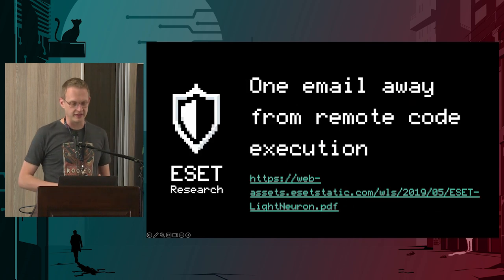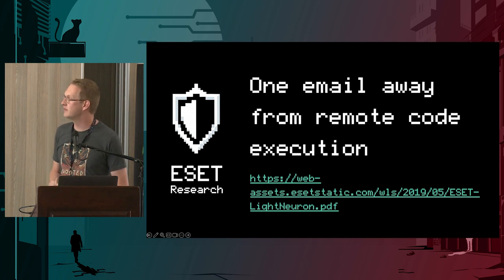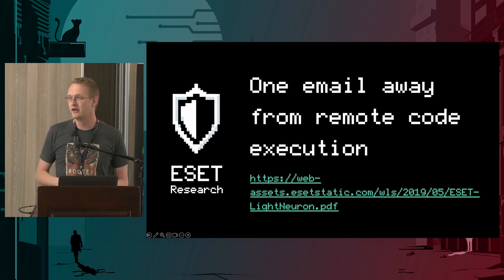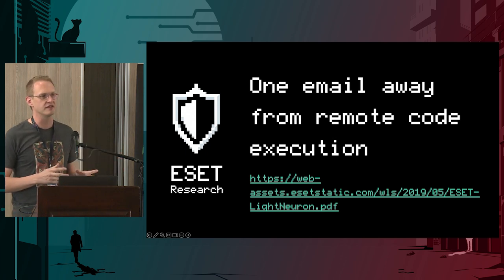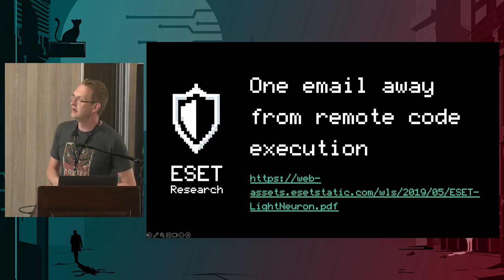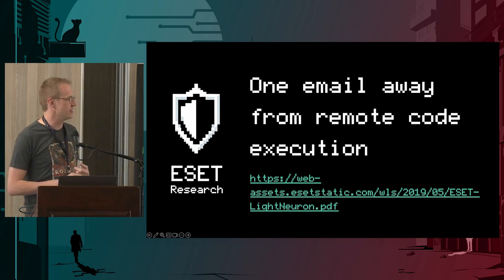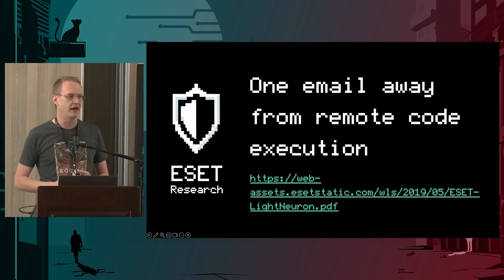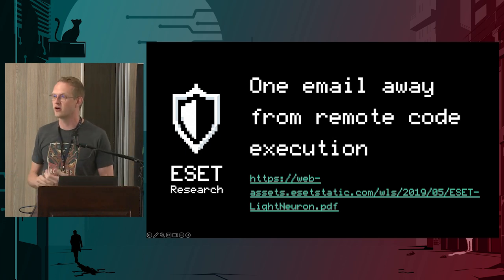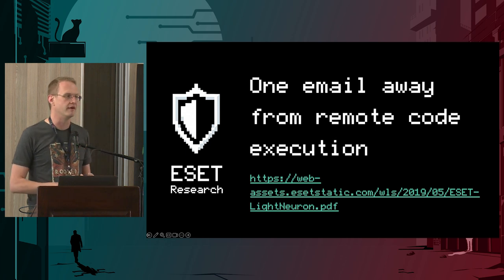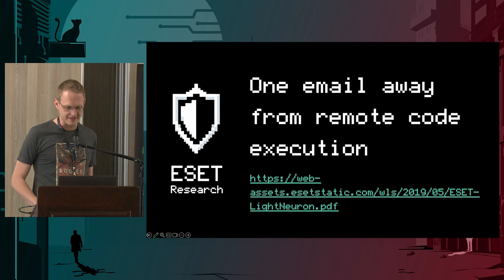One really important thing in knowing how these things work is we rely on really smart people that do research. They find malware out in the wild, reverse engineer it, disassemble it, and give a really good idea on how these things function end to end. For this talk, the work from the ESET security research team is genuinely amazing. It tells you a ton of stuff around how Turla operated and puts that into context with Light Neuron. I'm going to tell you some of the cool stuff so you don't have to spend 20 minutes reading the report.